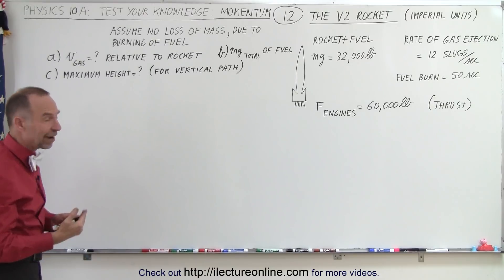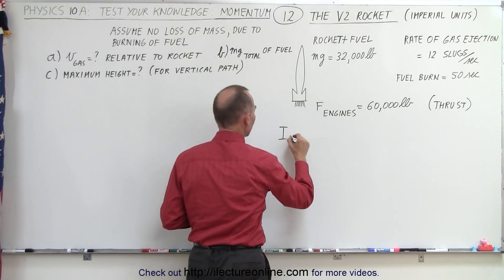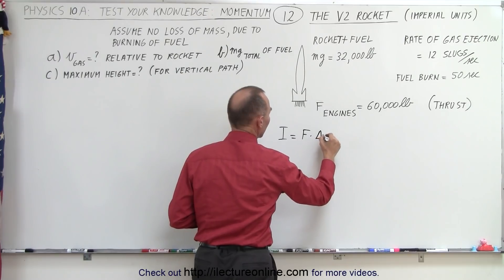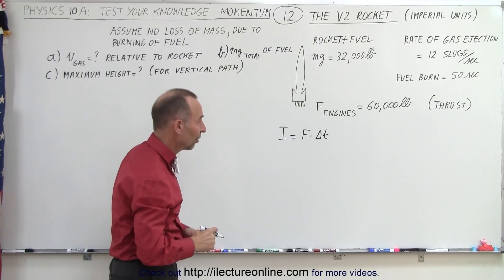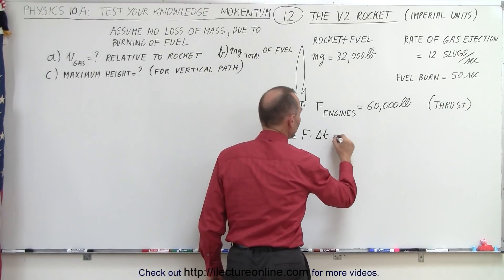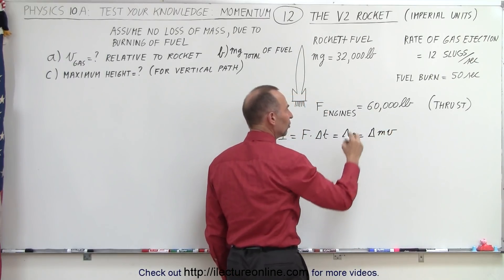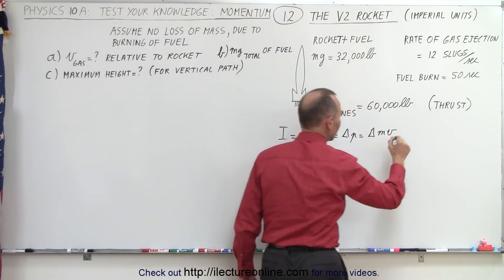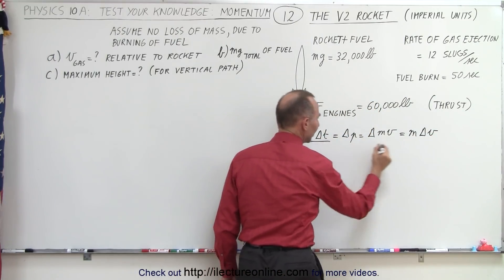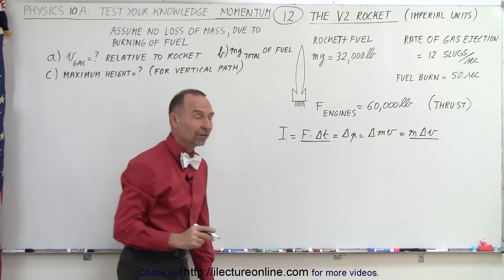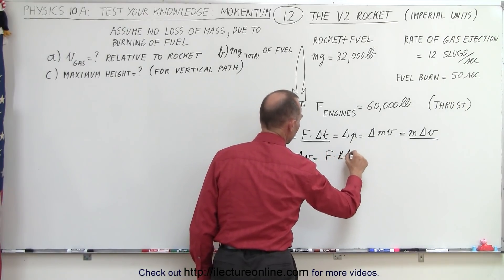Let's start with Part A: we need to find the velocity of the ejected gas. To do that, we use the definition of impulse, which is force times delta t — the amount of force by the engines for a certain amount of time. Let's do this for a single second. We also know that impulse equals the change in momentum, which is the change in the product of mass times velocity. Since the mass doesn't change, that's mass per second, so we can say it's equal to m times delta v.